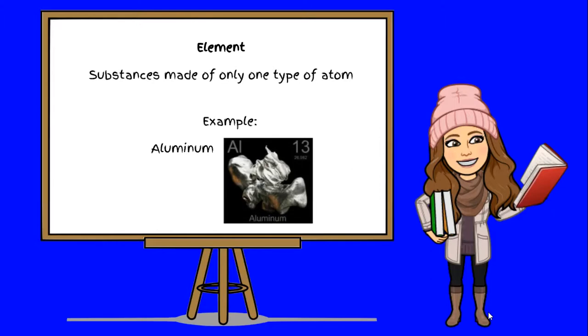Aluminum is made up of only aluminum atoms. Each element can be identified by its physical and chemical properties, which we will discuss in the next lesson. Elements cannot be broken down into different substances.